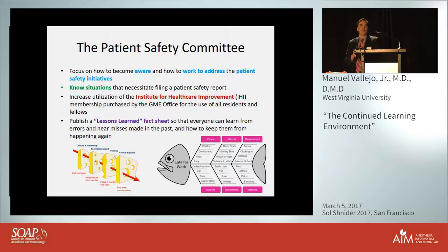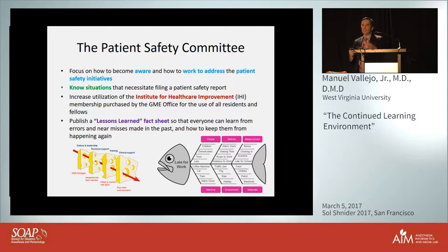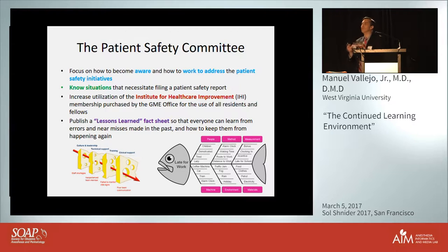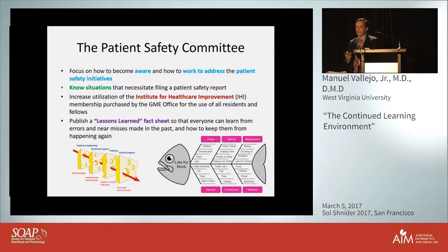What we're doing is making online modules available through the Institute for Healthcare Improvement. It's about $500 or so, and you can go online and get training on patient safety initiatives. We also want to publish a lessons learned fact sheet, so if there are problems in patient safety, there are multiple examples we can learn from — if it's published, you can look at it and hopefully get some guidance.